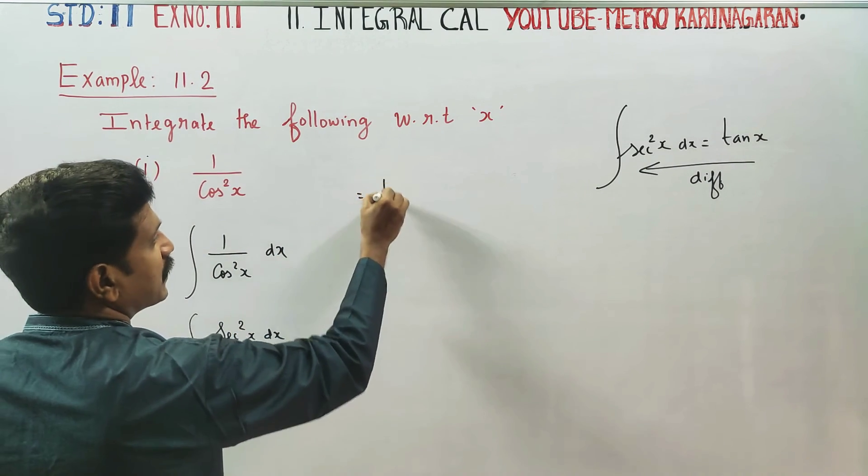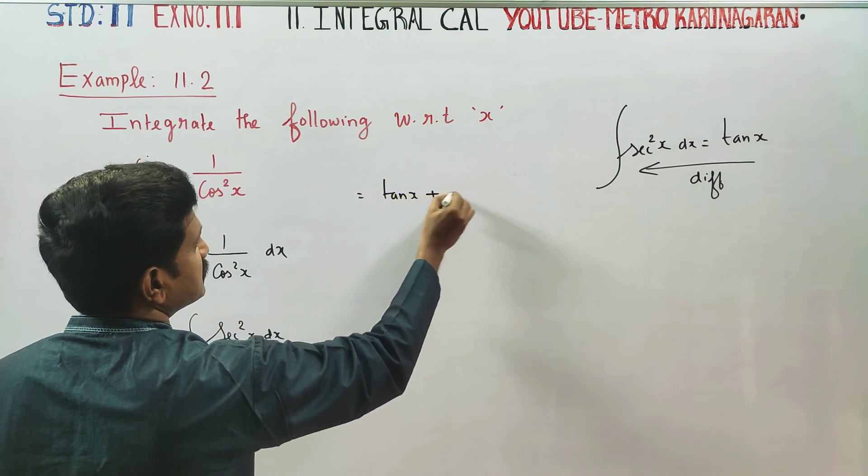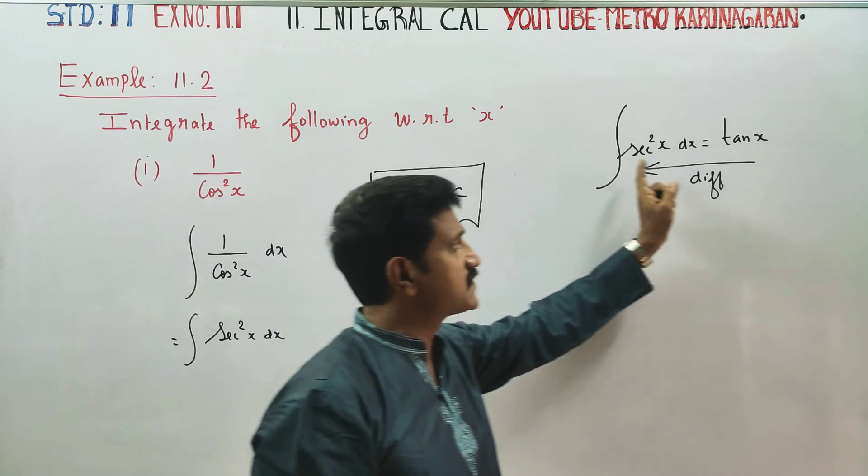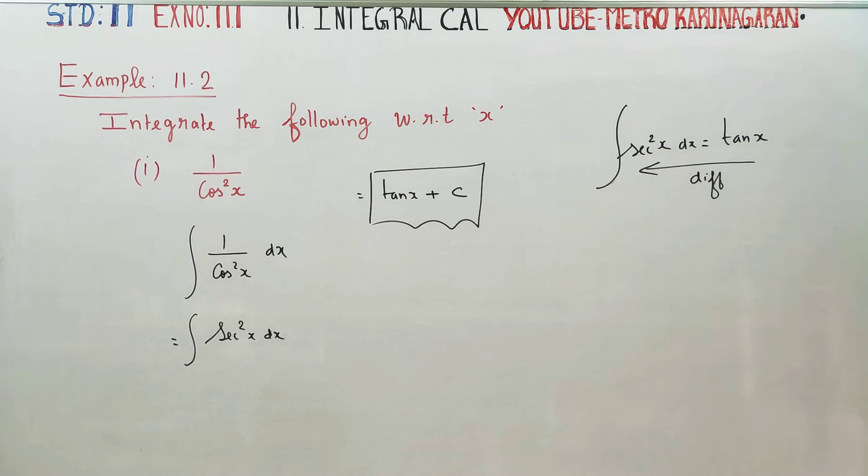Appo integration of secant square x, raised step da, the answer is tan x plus c. This is your final answer. So integration of secant square x is tan x. Okay, thank you.